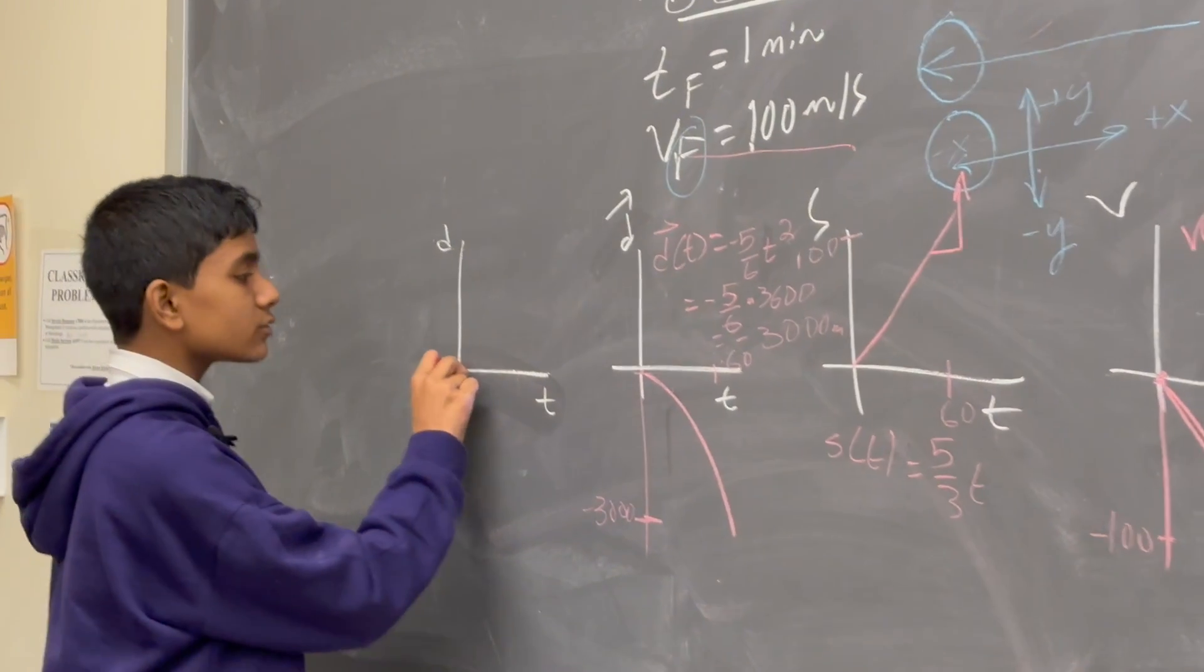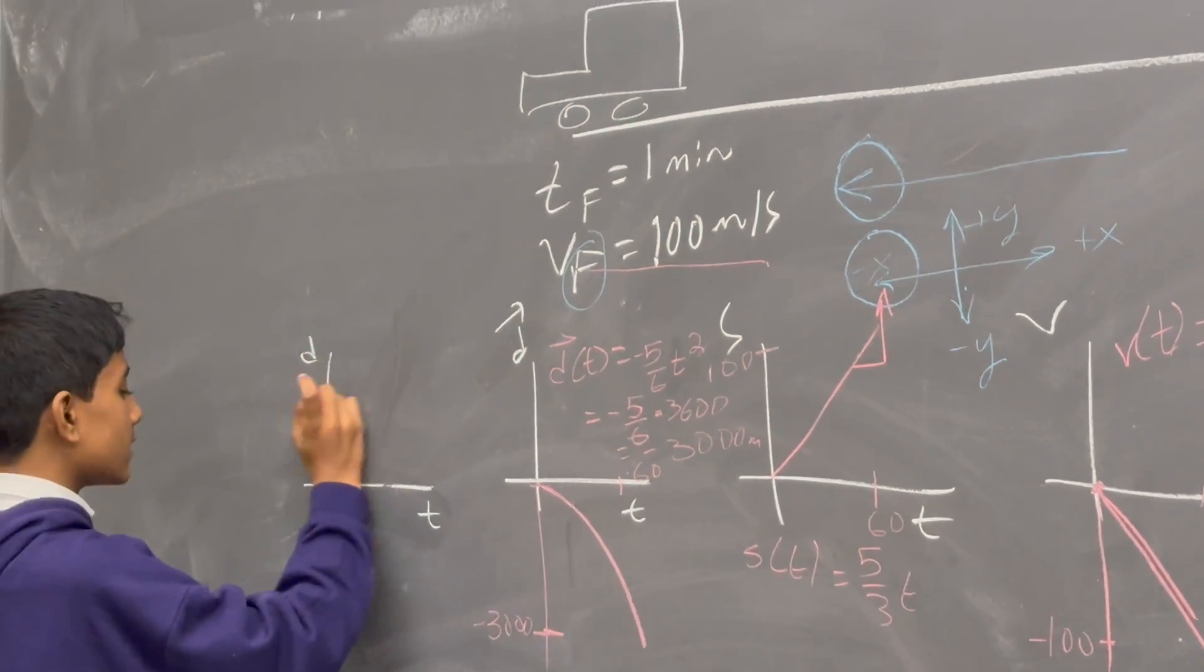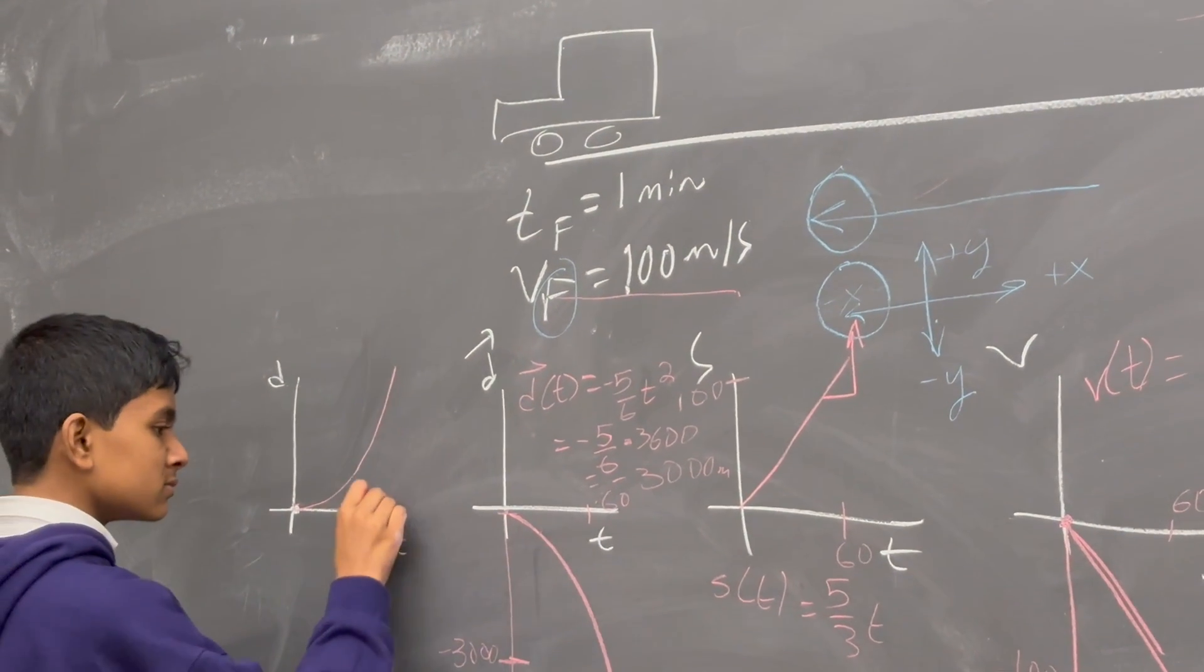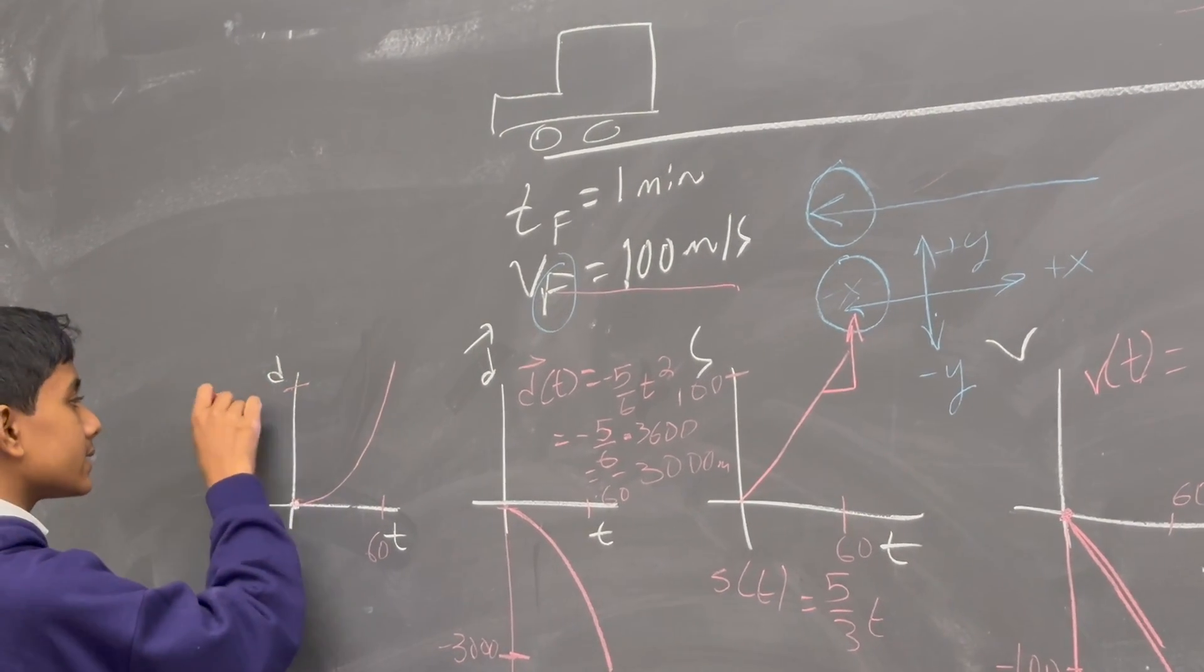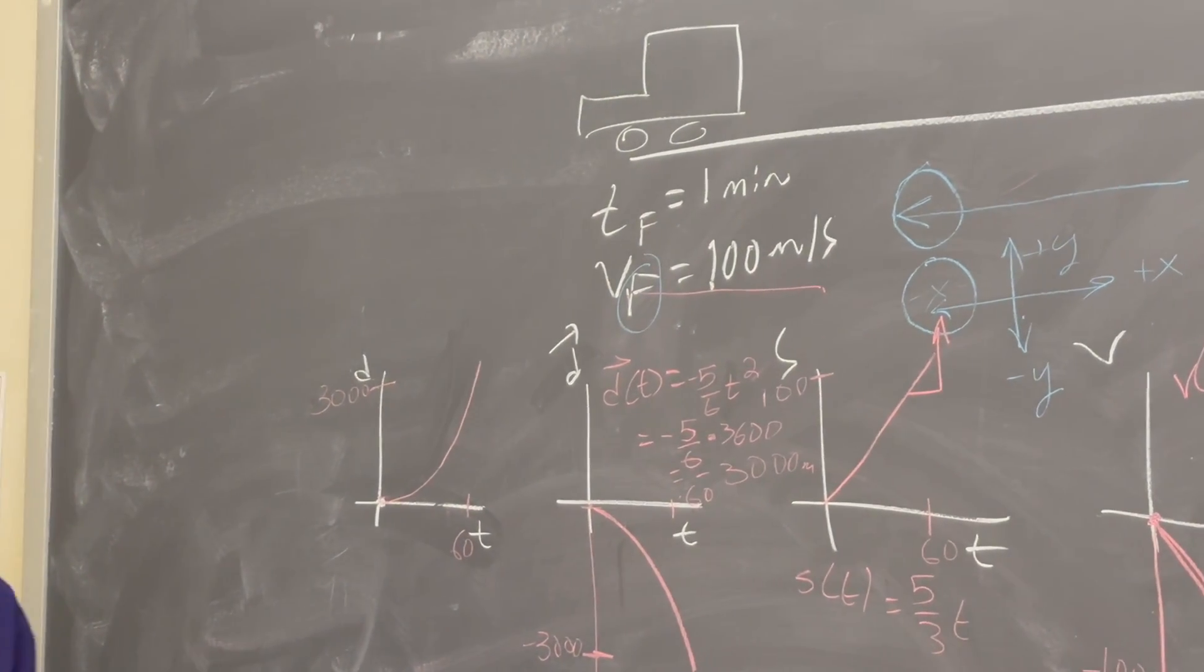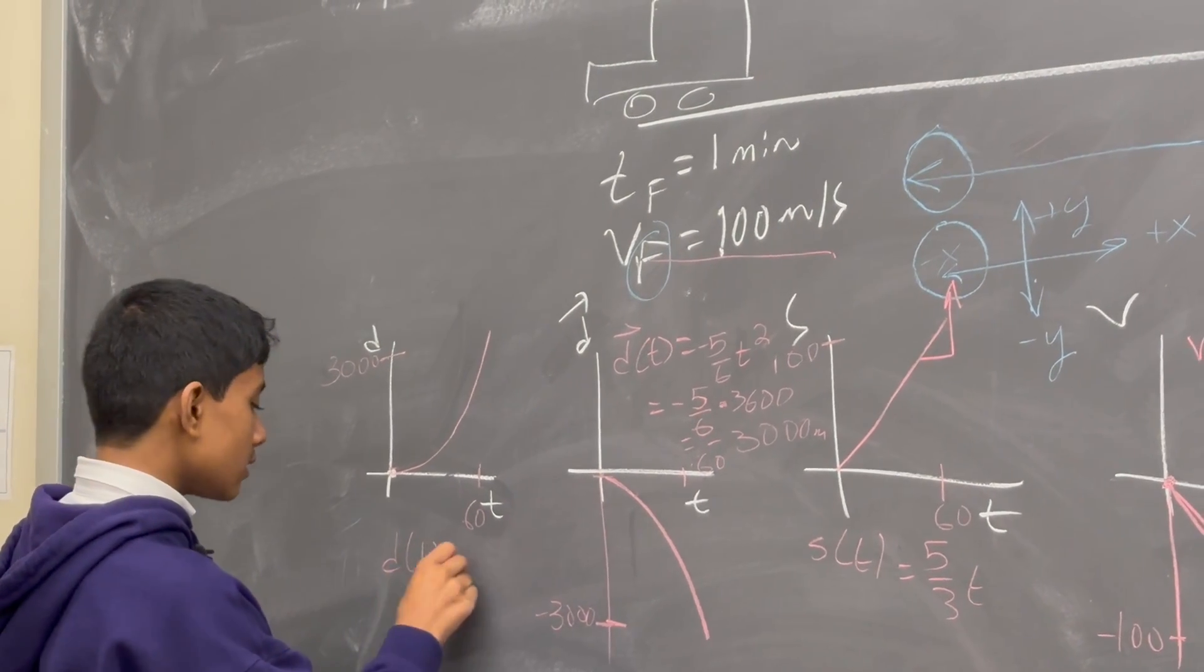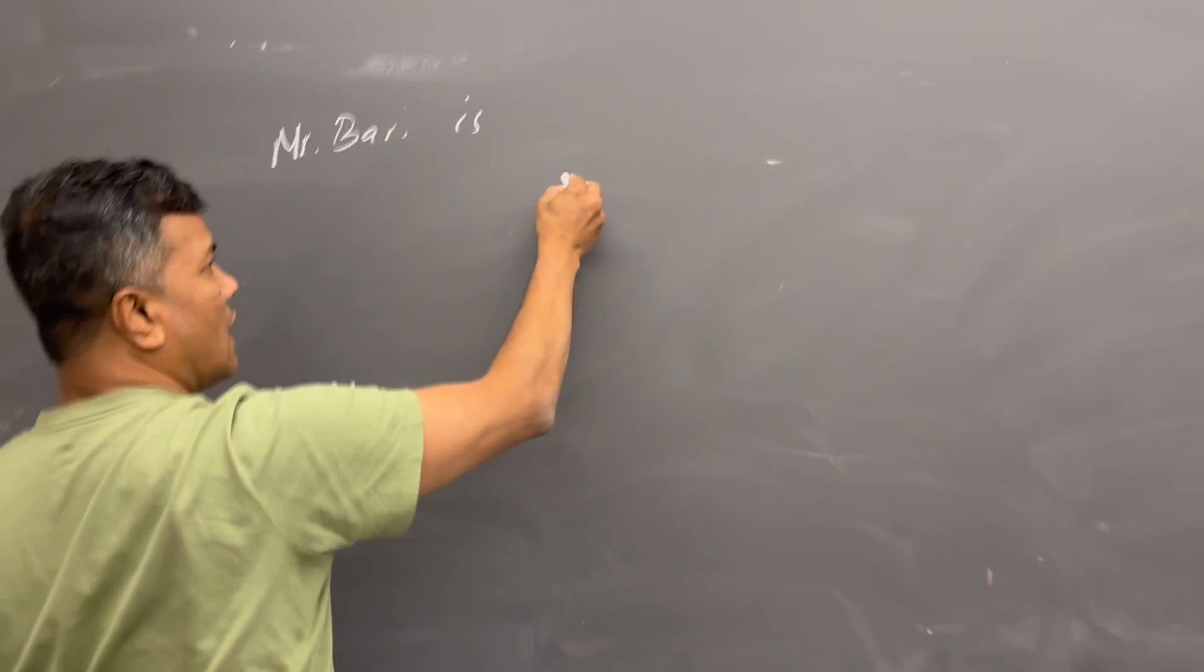And finally we have distance over time, which is just the absolute value of that. So, sorry, that's inaccurate. Okay, that's a better one. So this is 60 and this is plus 3,000. Alright, so that's it. Equation for that one? Oh, it's just the positive version, which is 5 over 6t squared.